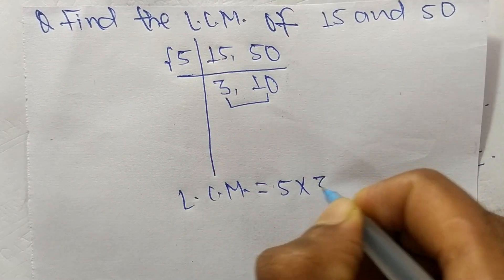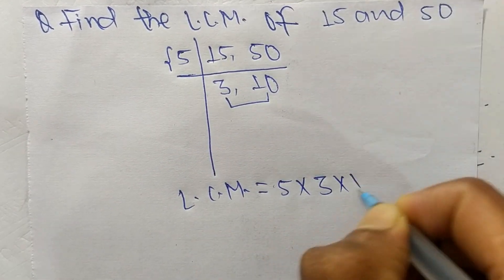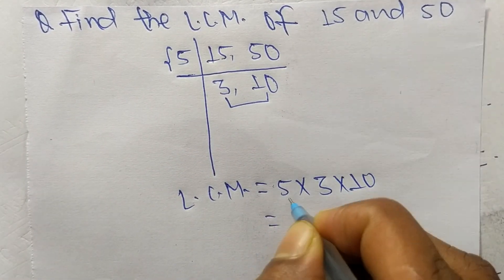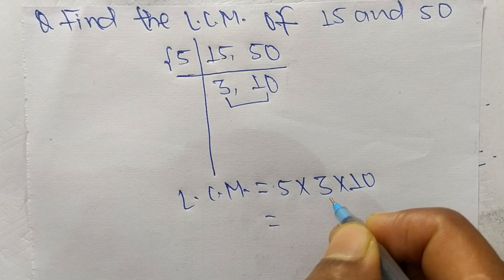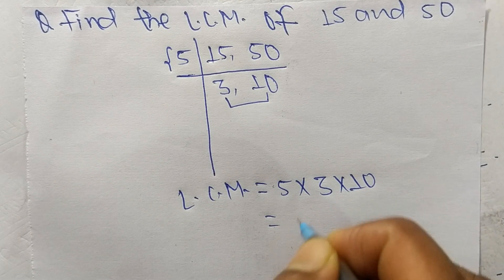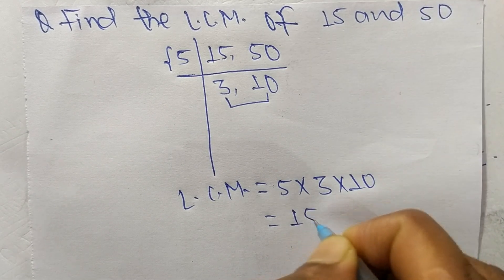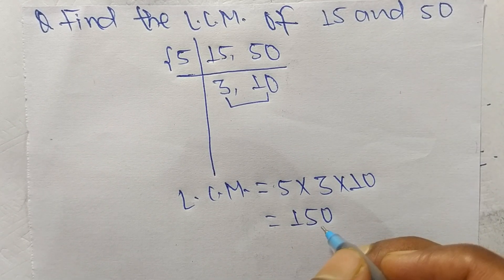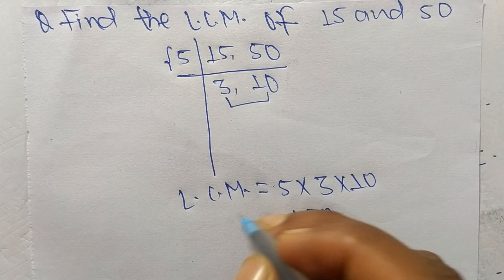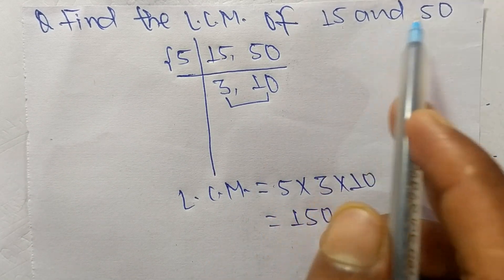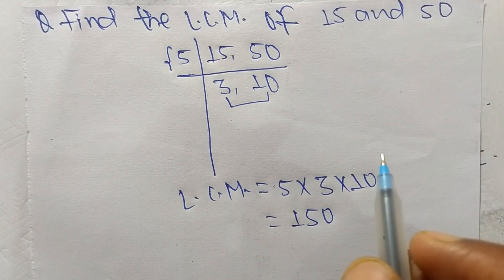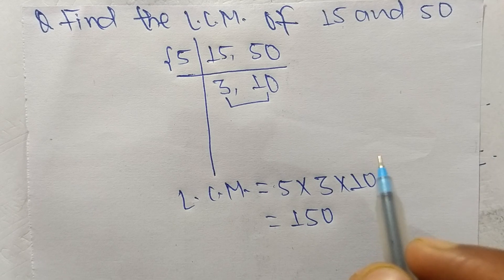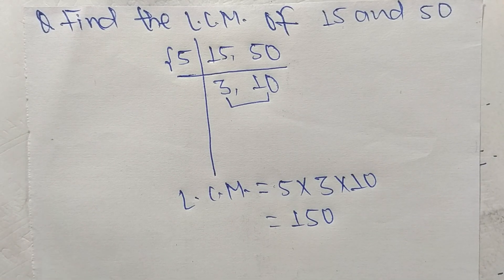From this part it is 3 and 10. So 5 times 3 equals 15, and 15 times 10 equals 150. So 150 is the LCM of 15 and 50. That's all for today, thanks for watching.